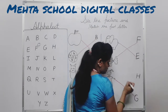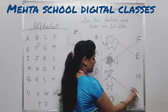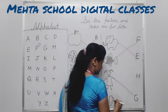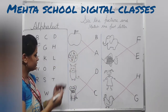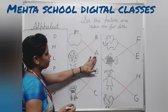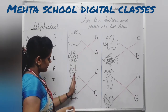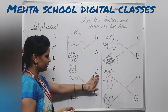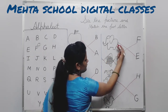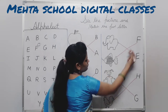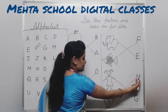What is this? H for hand. Here is H for hand. H for hand. Okay, let's see one more: A for apple, B for ball, C for cat, D for dog, E for elephant, F for fish, G for girl, H for hand.